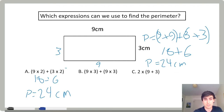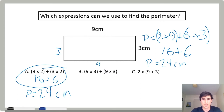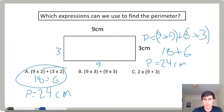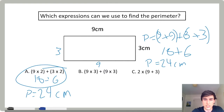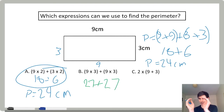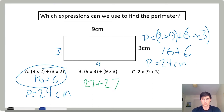Looks like A works. Let's try B: nine times three plus nine times three. This looks like they multiplied the side lengths. Nine times three is 27, and 27 plus 27 — doing everything inside the parentheses first, parentheses say do this first. There's no way that's going to be 24. This strategy doesn't work.